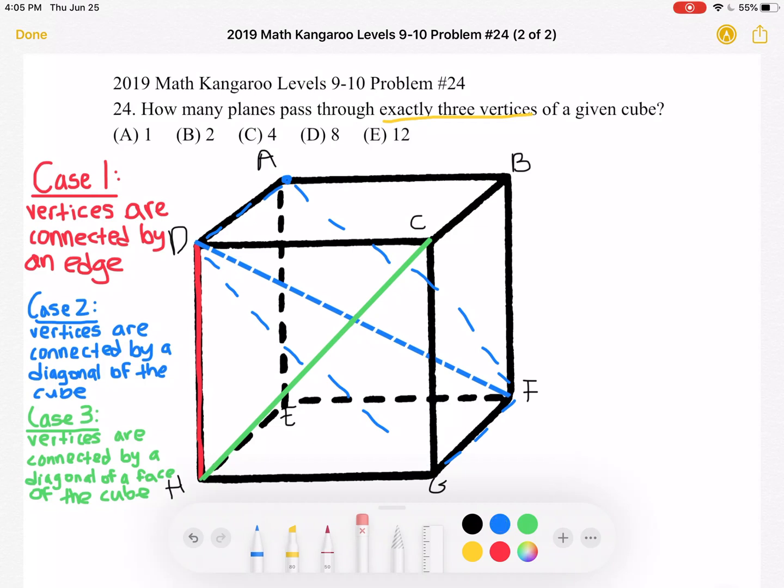So again we have the plane going through four vertices instead of the desired three. So that's not what we want but let's do one more just to see if this continues.